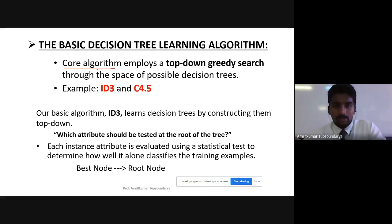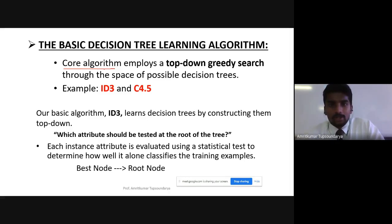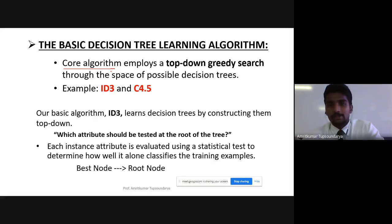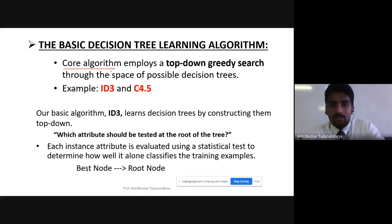To put the core algorithm in a single line: the core algorithm employs a top-down greedy search of the space of possible decision trees. This space includes the branches of the tree, attribute values, leaf nodes, intermediate nodes, and so on. The core algorithm simply employs a top-down greedy search approach throughout the decision tree space.